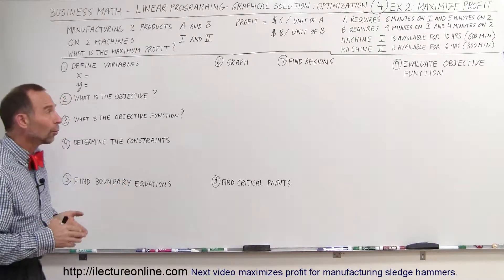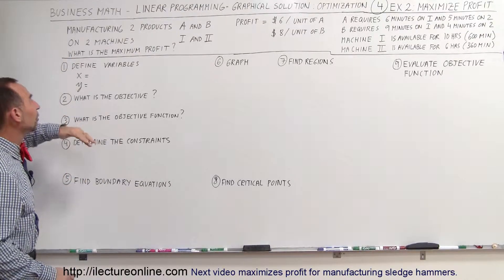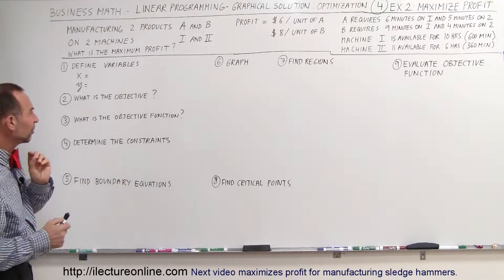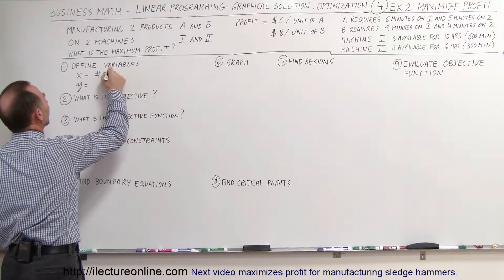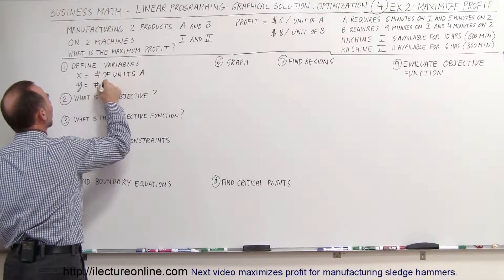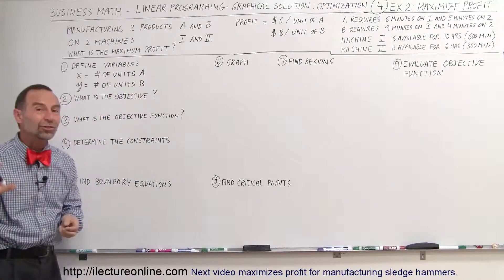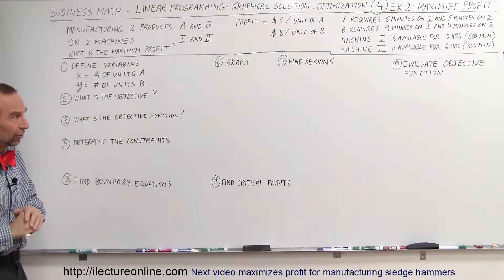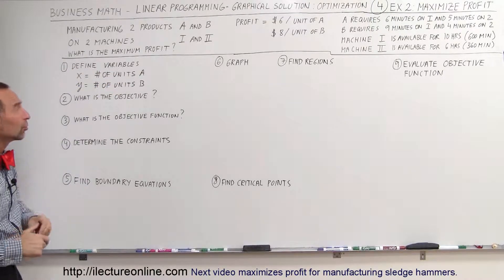Here are the nine steps — there's actually a 10th step where you give the solution. Step one: define the variables. Let X represent the number of units of A produced and Y represent the number of units of B produced. Do not use A and B to represent that — it will get confusing. Use two separate variables not used anywhere in the text of the problem.